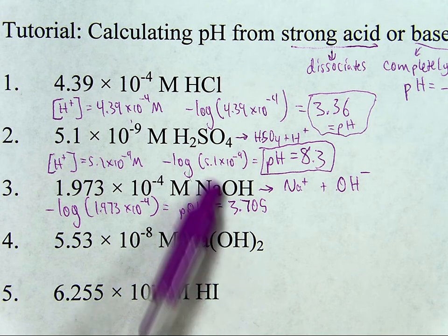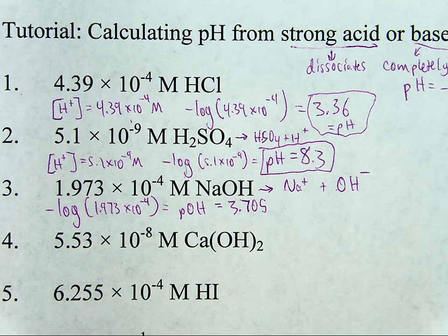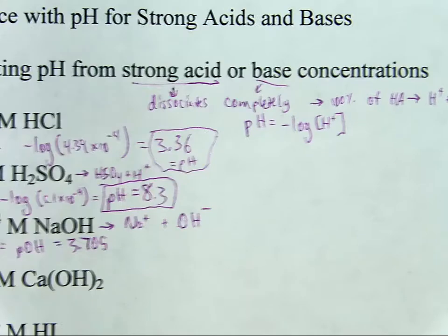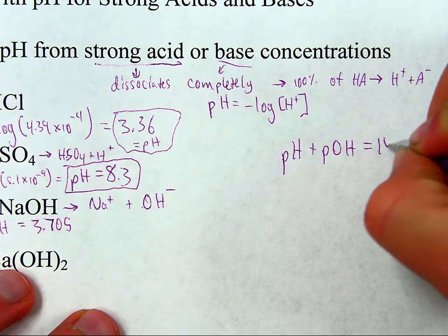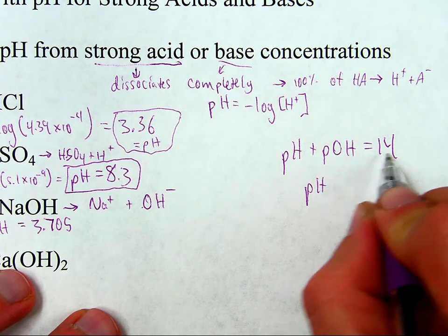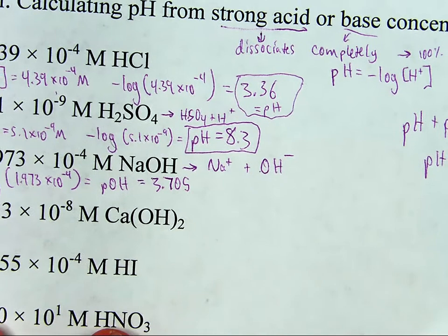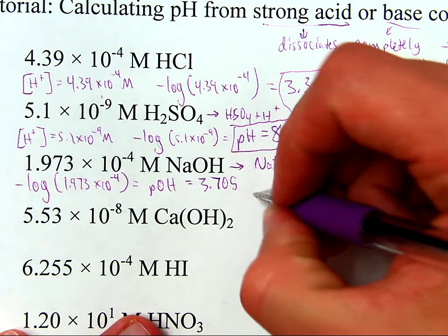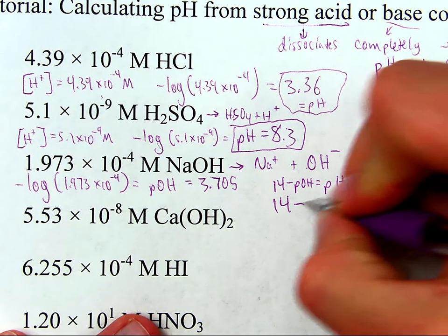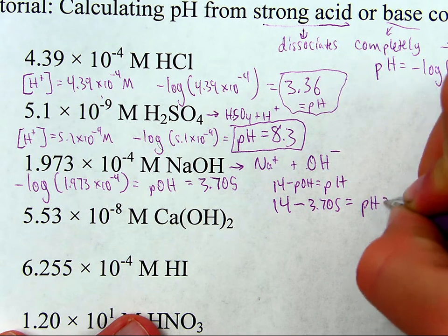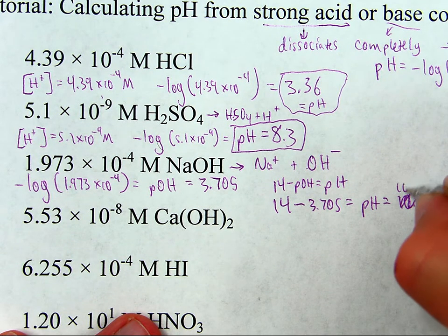Okay. But it's not asking for pOH, it's asking for the pH. So I want to find the pH for this sodium hydroxide solution. Well, fortunately I know, and hopefully you do too, that pH plus pOH equals 14. That means if I want to find pH, just subtract pOH from both sides, pH equals 14 minus pOH. So that's what we'll do. So 14 minus pOH equals pH. Thus, 14 minus 3.705 equals the pH, which is 10.295.